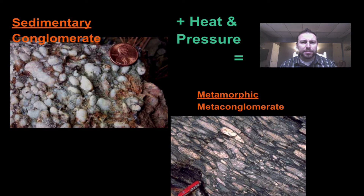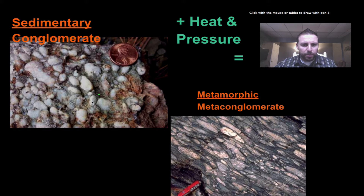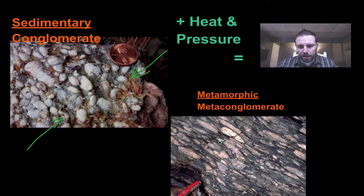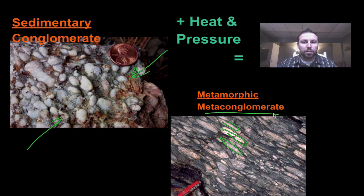We can do the same thing to conglomerate — that rock with nice rounded pebbles. If we apply pressure to it, notice how those pebbles will actually start to flatten out. Sedimentary conglomerate turns into what's called a metaconglomerate, or metamorphic conglomerate.